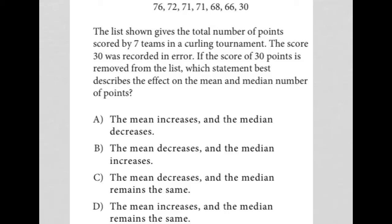This question begins with a list of numbers - looks like we have one, two, three, four, five, six, seven of them between 76 and 30. The question says the list shown gives the total number of points scored by seven teams in a curling tournament. The score 30 was recorded in error, so this is not a correct score. If the score of 30 points is removed from the list, which statement